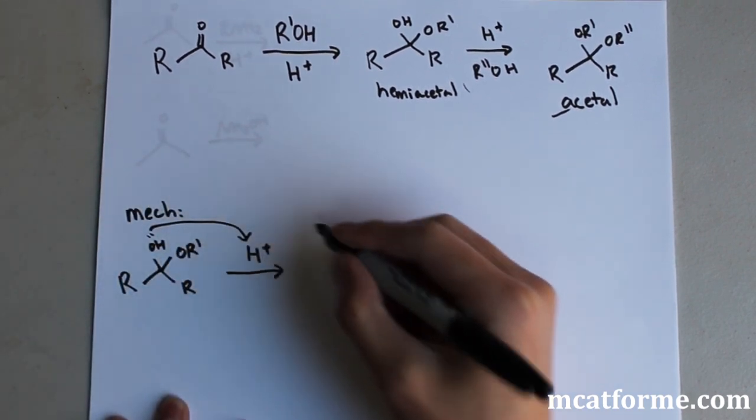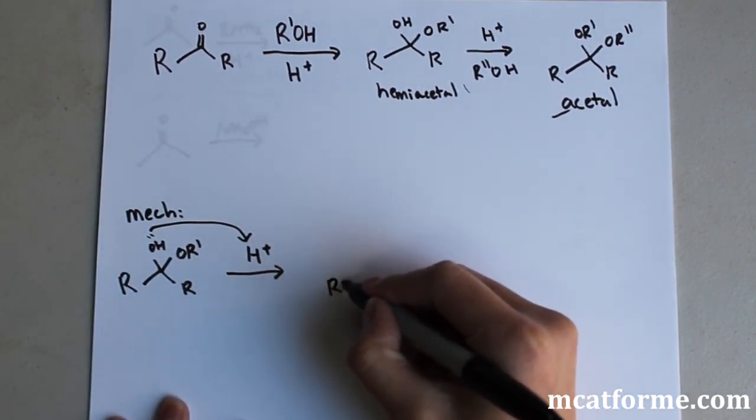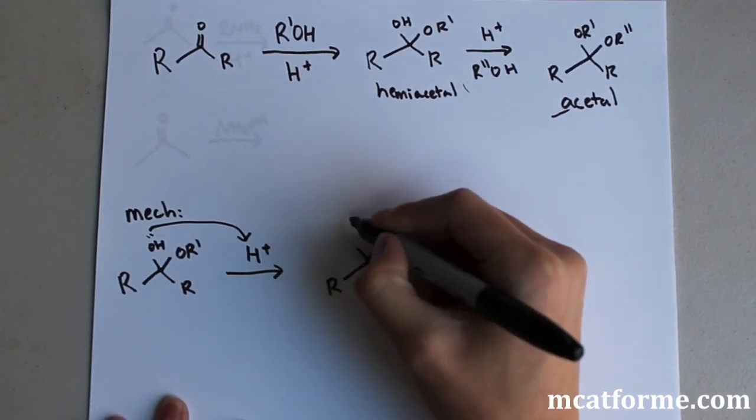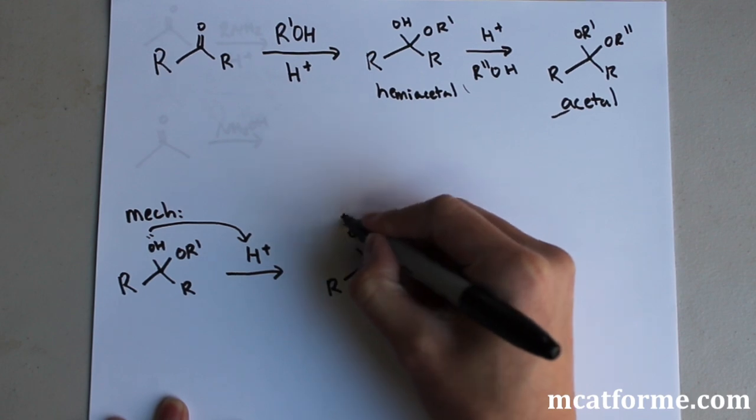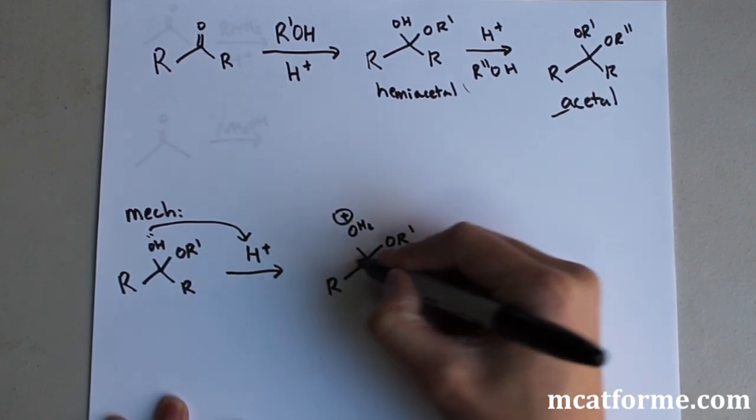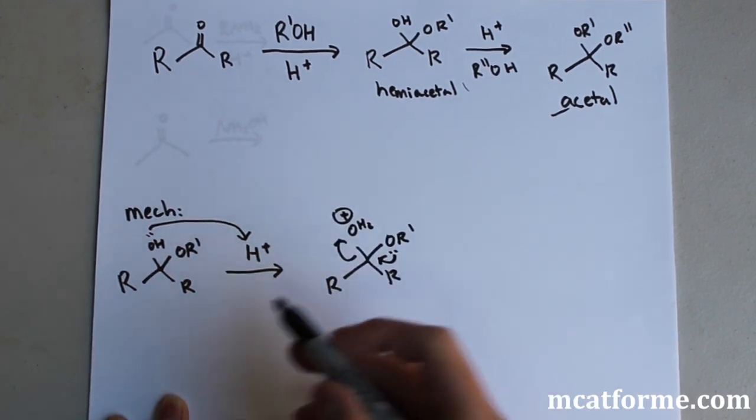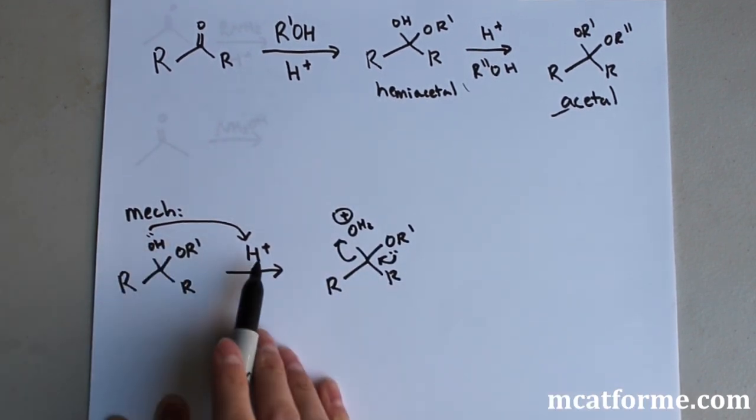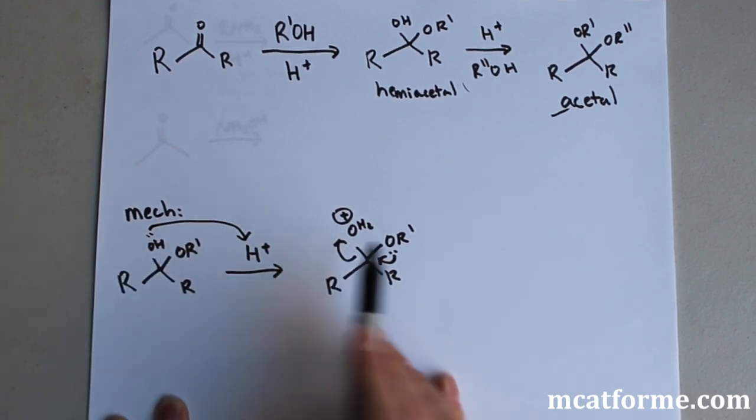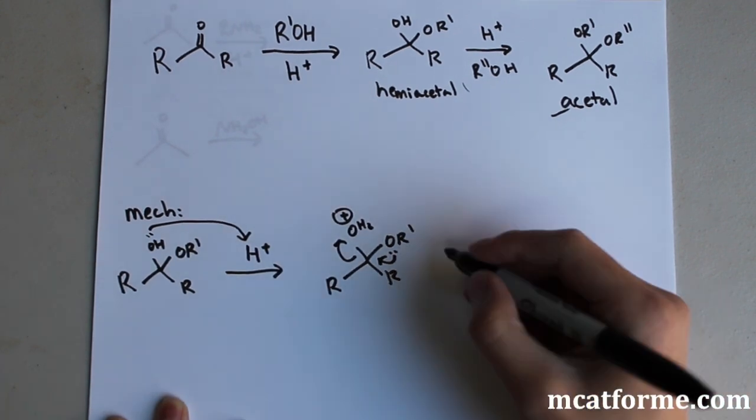So what pretty much happens, this is a simplified mechanism so it may not show everything. A lot of times when I draw these mechanisms, it's just more to make it a little bit more simplified so we can visualize how it may be done, but that's not actually how the electrons may move. So what happens is the OH is just going to grab an H+, because OH is not a good leaving group, but charged water is a good leaving group.